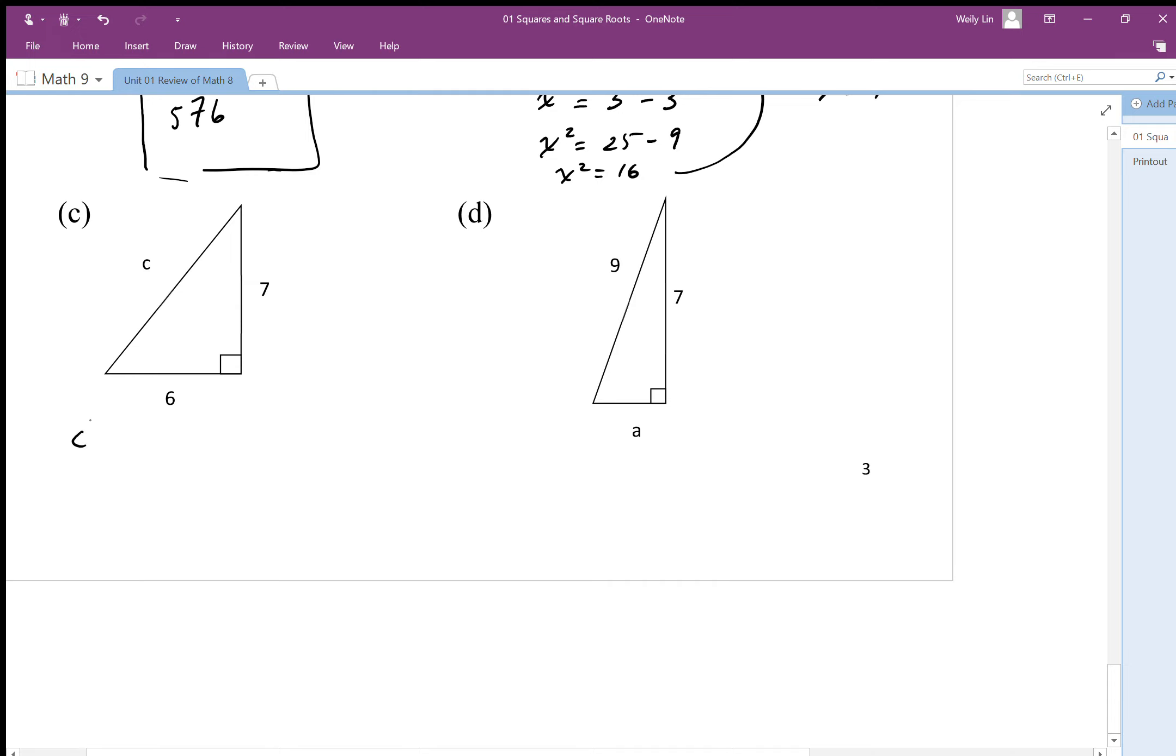So this is going to be c squared is equal to a squared plus b squared. It doesn't matter which one is a and b.